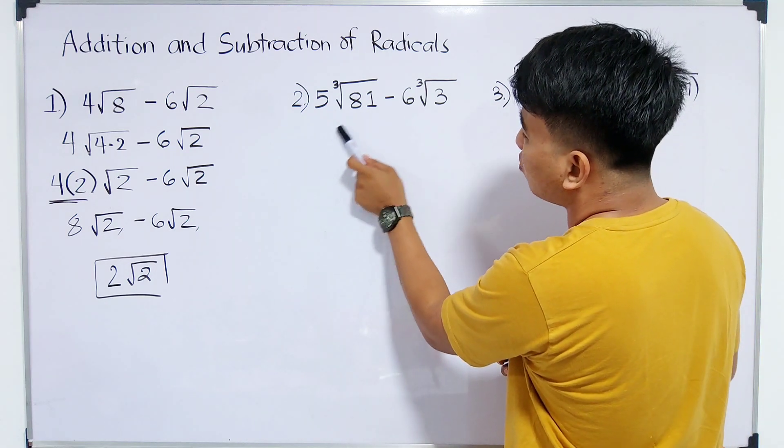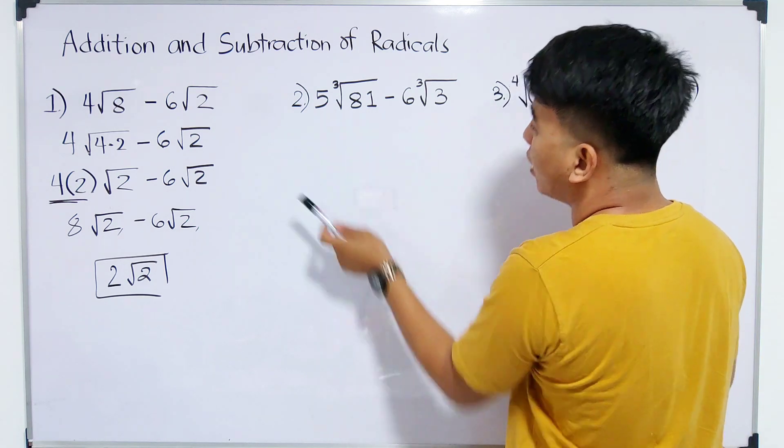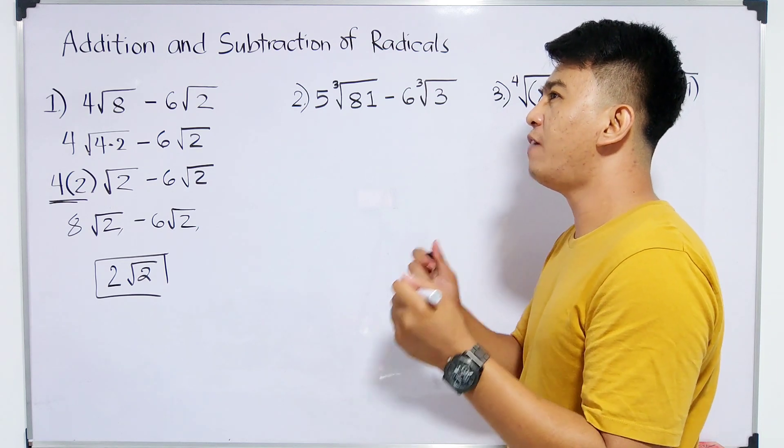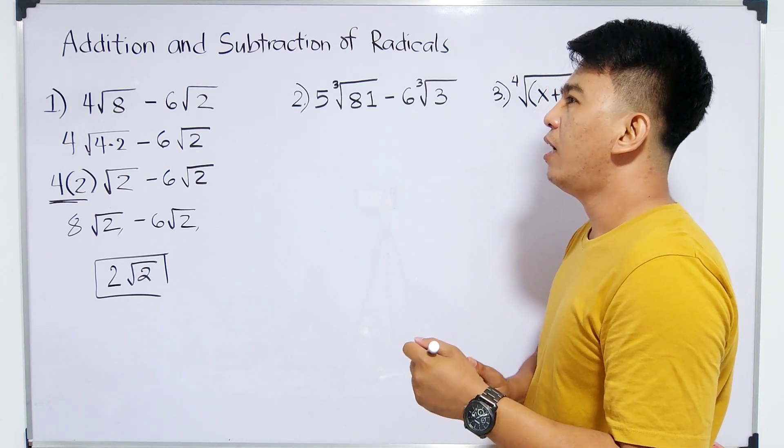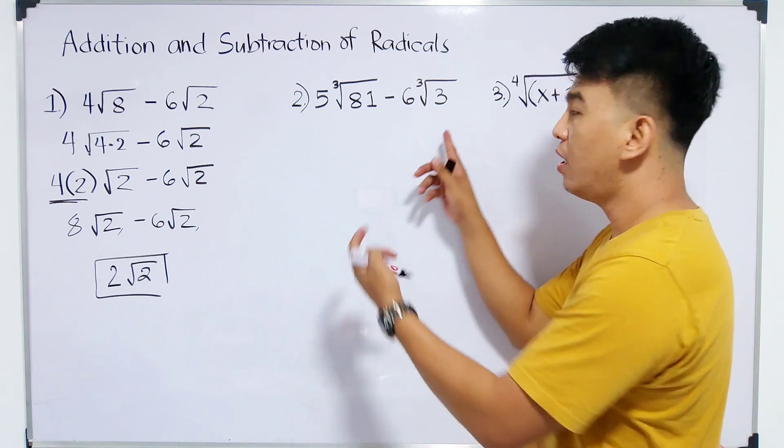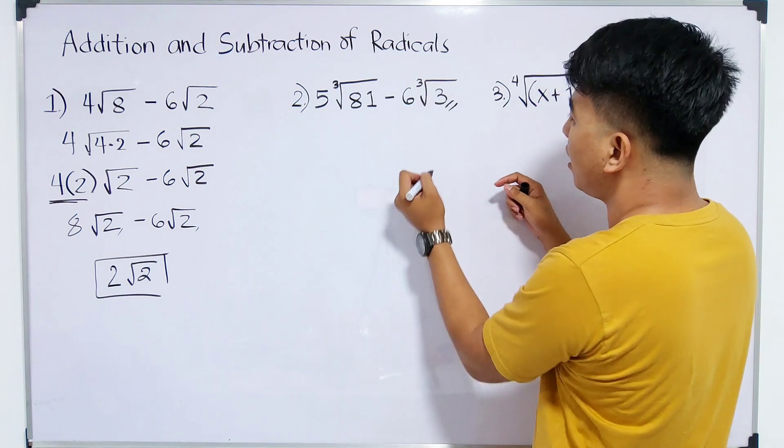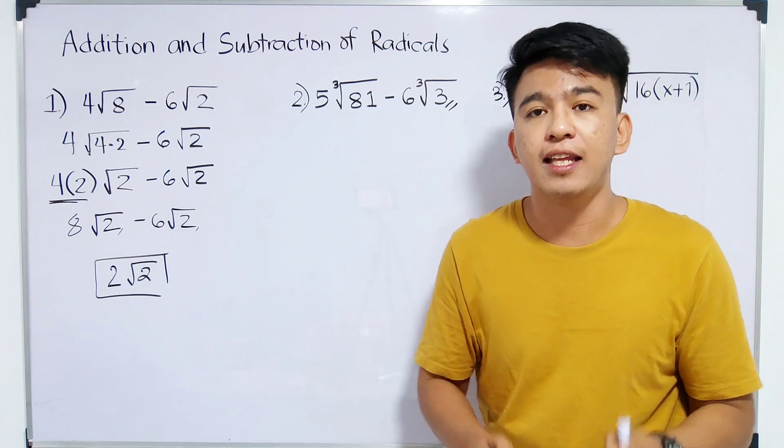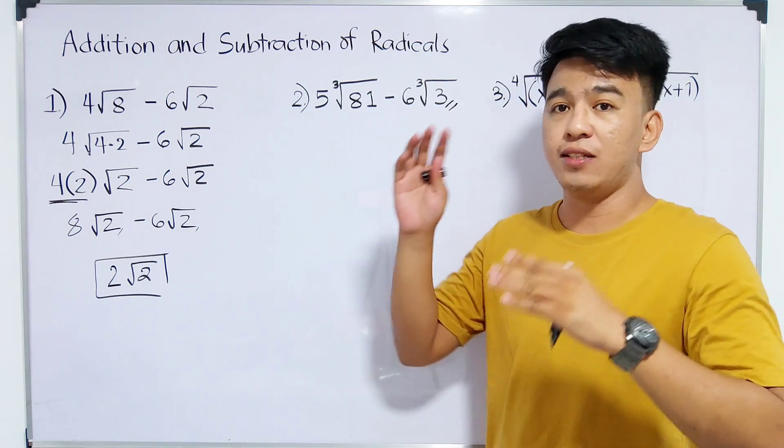So what we need to do is to extract the cube root of 81, wherein one of the factors of 81 needs to be a perfect cube. And another thing you can consider is that this radicand, this 3, means one of the factors we need from 81 is 3.